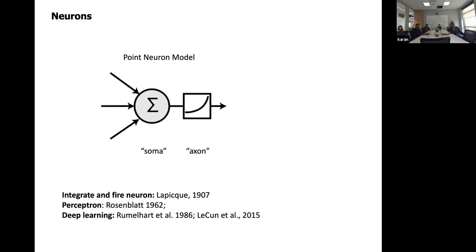This gets to the question Charmaine was just talking about. This is the typical point neuron model: you have inputs coming in, you take a weighted sum, and pass it through some non-linearity. The idea is that this integration happens at the soma and goes through a nonlinear activation function — like a spike through the axon in biology. This was originally proposed around 1907, and it is still by far the dominant model in computational work and deep learning. In the perceptron in 1962 — the first computational model of neurons — they used this.